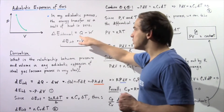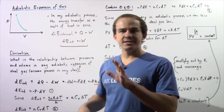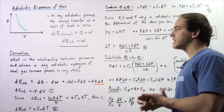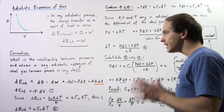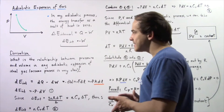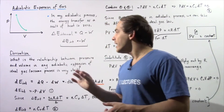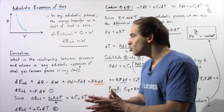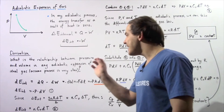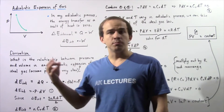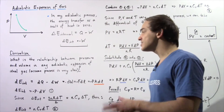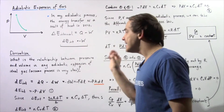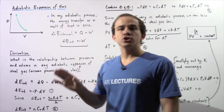What doesn't change is Q — it is always zero in any adiabatic expansion or compression of a gas. Now let's derive an equation that gives us the relationship between pressure and volume in any adiabatic expansion or compression of an ideal gas, assuming that the expansion or compression is very slow.